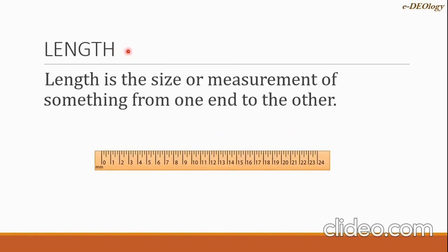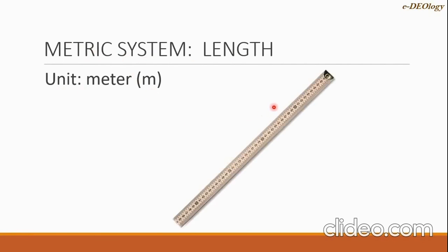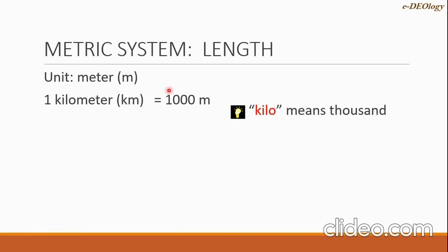Hi everyone, today we're going to study the metric system. Let's begin with length. First, let us define length — it is the size or measurement of something from one end to the other. For the metric system, the unit for length is the meter, and the symbol is a small m. A meter stick will tell you how long a meter is.